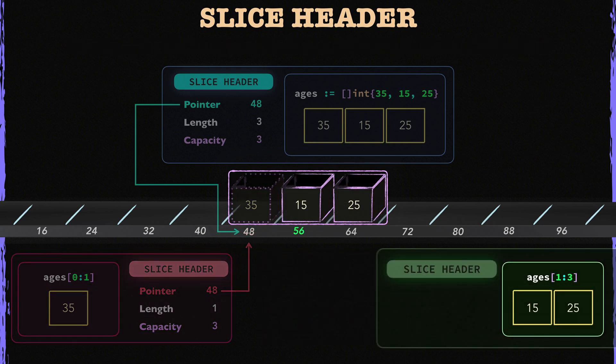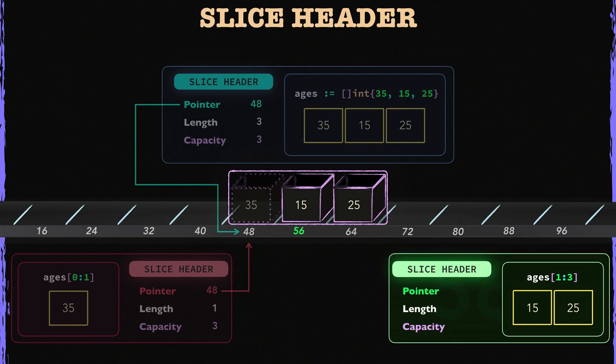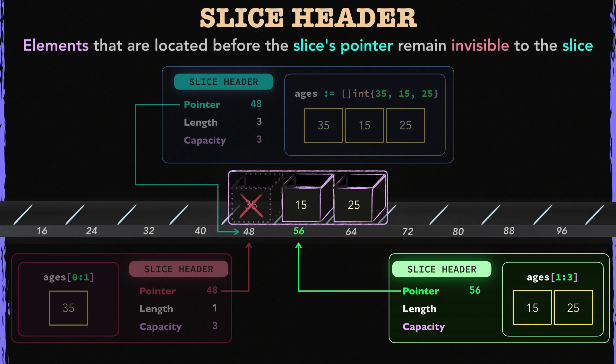Let's take a look at the green slice now. This time, the pointer field is 56. So the green slice's first element is not the backing array's first element. The green slice stores the memory location of its backing array's second element. So it cannot access the array's first element anymore. It is because the elements that are located in memory addresses before a slice's pointer become invisible to that slice, so it cannot look back.